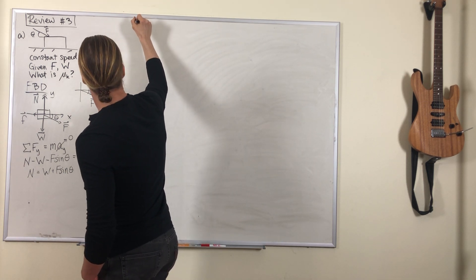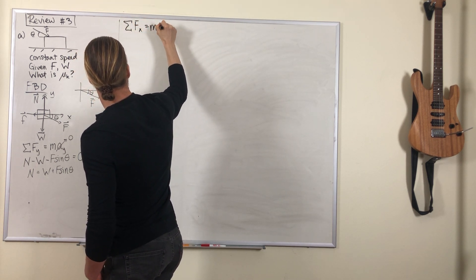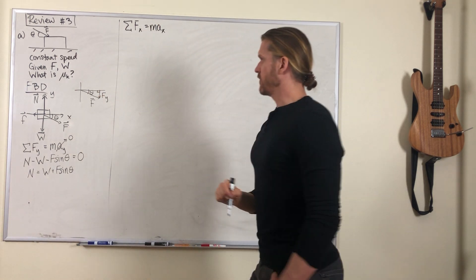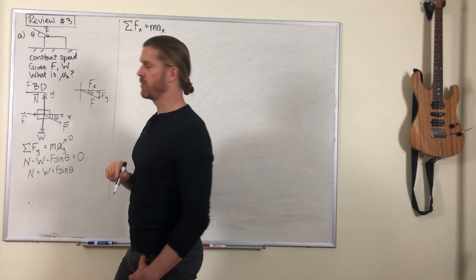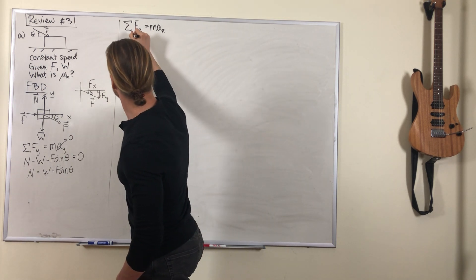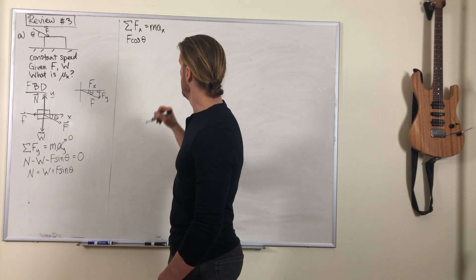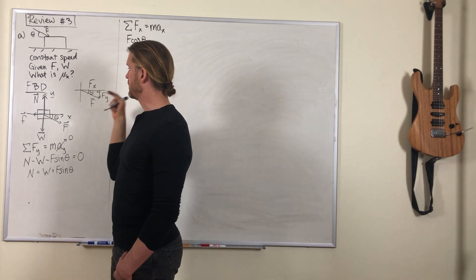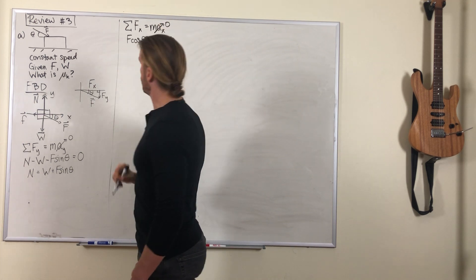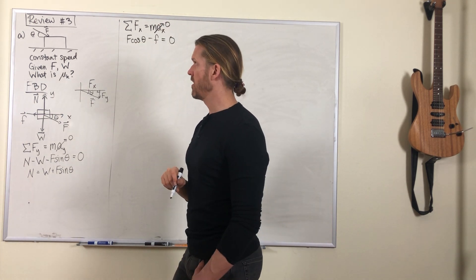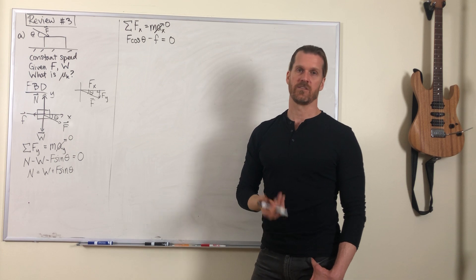Now in the x direction, we've got two forces. There's the x component of this push. That x component is adjacent to the angle, it gets cosine for being adjacent, and that push goes to the right. It's being opposed by the friction force going to the left. And guess what, there's also no acceleration. The box is moving but it's moving at a constant speed. Its velocity is not changing, therefore its acceleration is zero.